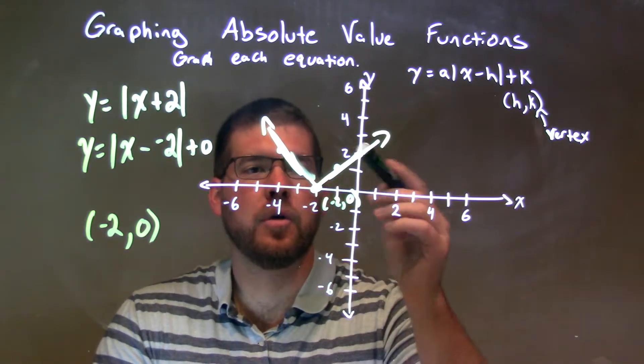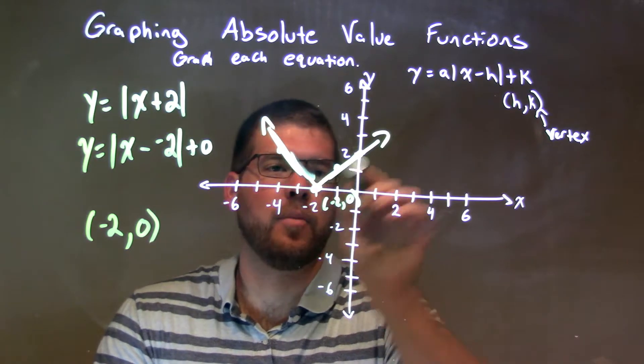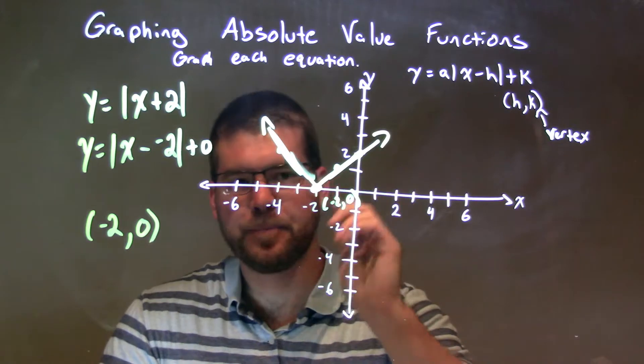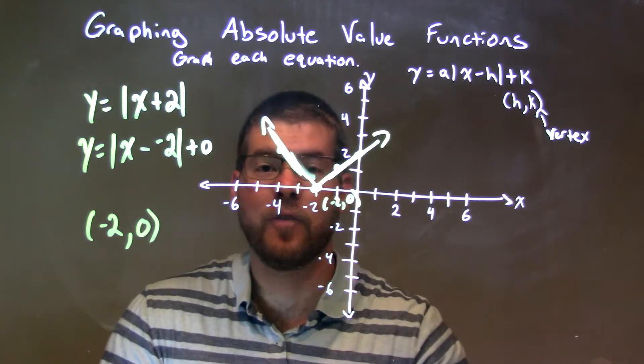Our a value was a positive 1. It was written right out front there. So, we had a slope of 1, up 1 over 1, up 1 over 1. Mirrored that to the left. Graphed it. And so, we have a V shape here. And our final answer.